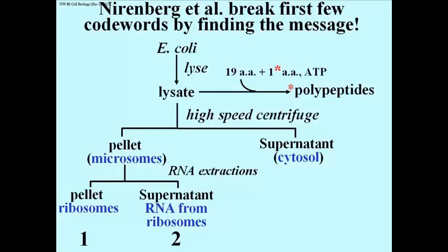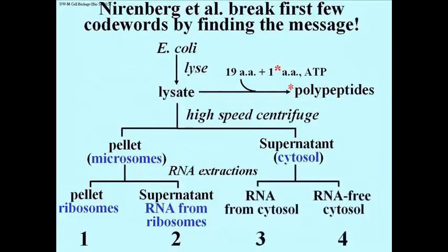So the structure of the ribosome was intact, but some kind of RNA had been taken off of it. The supernatant was also extracted, specifically RNA was extracted from the cytosol, to get RNA from cytosol, fraction 3, and then an RNA-free cytosol. So these are the 4 fractions that Nirenberg ended up with.